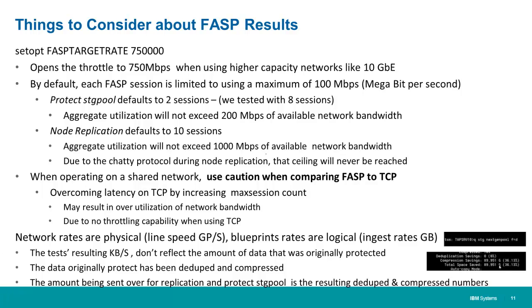Note that network rates refer to line speeds, while the amount of data backed up from production servers to the Spectrum Protect server is a specific number of gigabytes. That data is deduplicated and compressed, so all that's replicated to the target server is the deduplicated and compressed portions. The amount of data seen in the Protect Storage Pool process actually represents much more data when uncompressed and reconstituted.